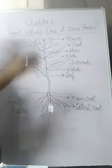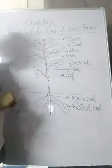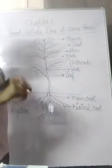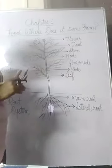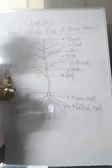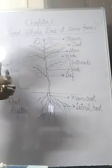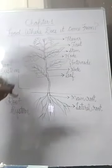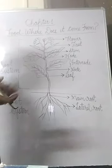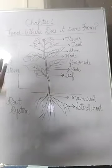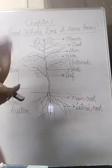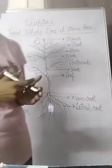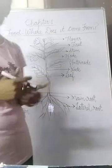So students, we were revising chapter 1 and we have discussed what is food, what are the various ingredients which we use to make food and the sources of ingredients. So ingredients, they come from plants and animals mainly. The food which we prepare, we get the products from plants and animals.